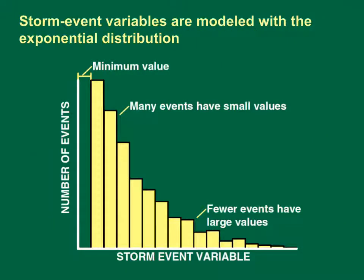These precipitation event variables commonly are modeled using the two-parameter exponential distribution because there are many small values and fewer large values. This graph shows a histogram of precipitation data. The vertical axis shows the number of events in each category, and the horizontal axis shows the value of the storm event variable, which may be volume, duration, or the time between storm midpoints. The first bar is missing because the U.S. EPA definition of a runoff producing event has a minimum value for each variable. Thus, the two-parameter exponential distribution is characterized by the minimum and mean values.